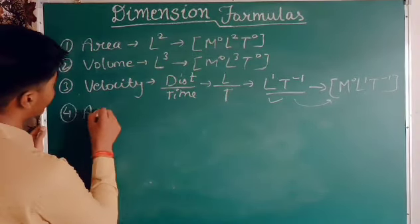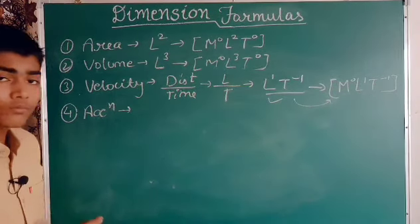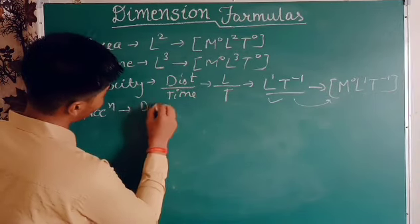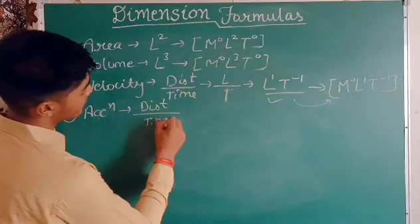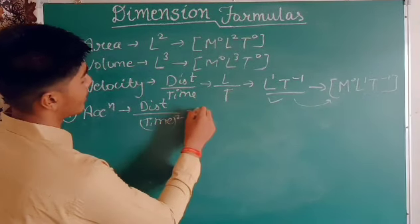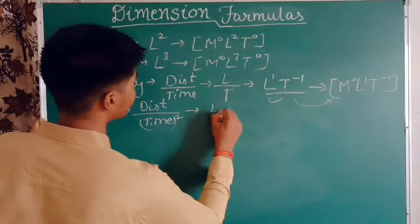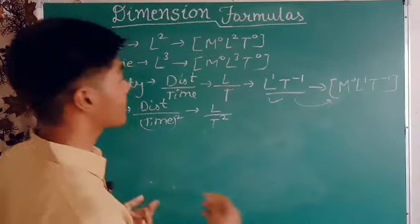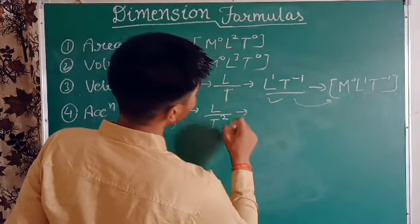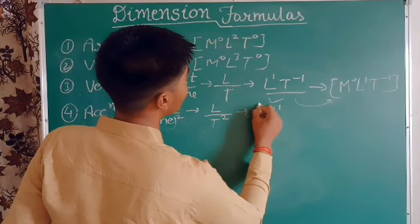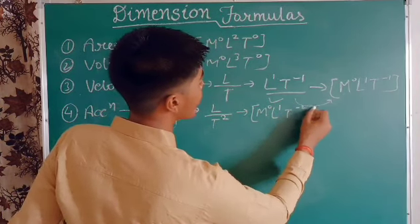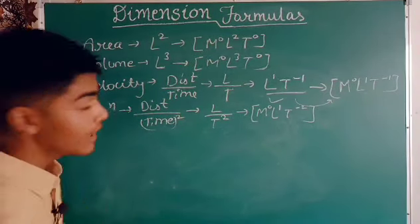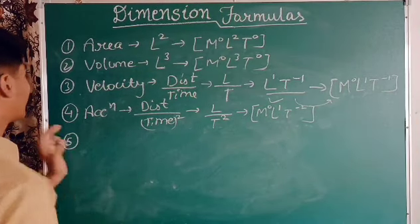Now let's talk about acceleration. Acceleration is distance divided by time squared, so it is L divided by T². This gives us L¹T⁻². Putting it into the general formula, the dimensional formula for acceleration is [M⁰L¹T⁻²].